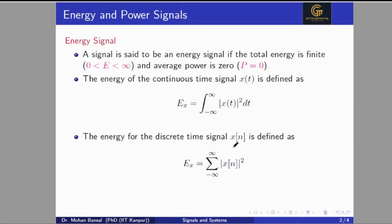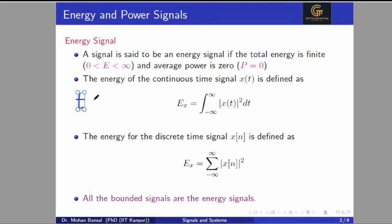For the discrete time signal, energy can be computed by the summation from minus infinity to infinity of |x[n]|². All the bounded signals are energy signals — when the signal has some finite value for all intervals, and for any time instant the signal is bounded, we consider the signal an energy signal. In other terms, if at t equal to infinity we get x(t) equal to 0, we can say this is an energy signal, satisfying the bounded conditions.